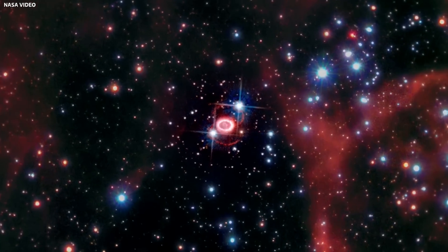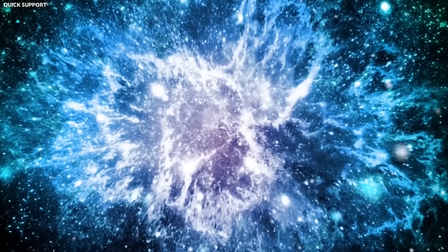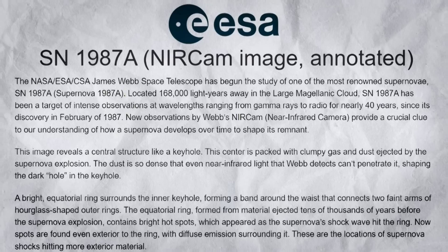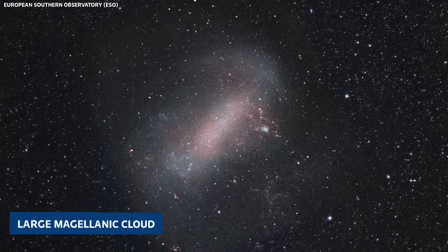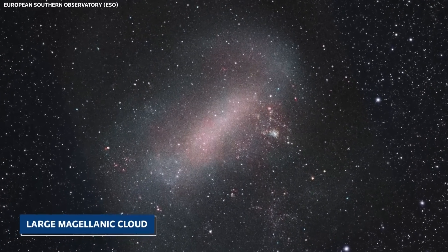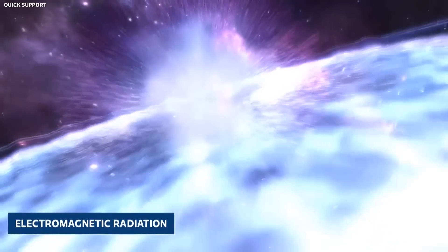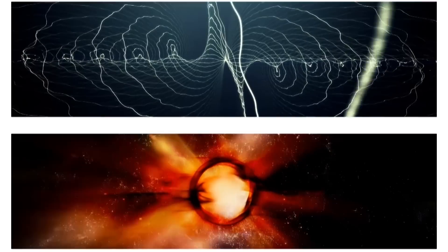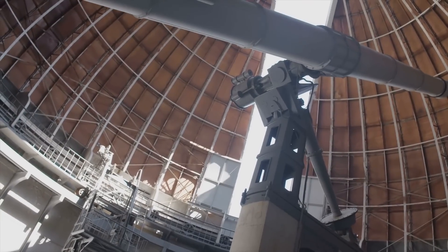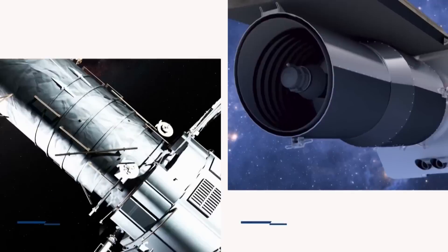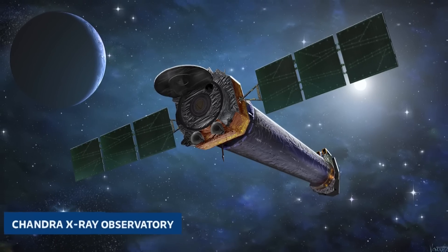The SN 1987A supernova, resulting from the violent aftermath of a giant star's demise, is located 168,000 light-years away in the Large Magellanic Cloud, a satellite galaxy of the Milky Way. This supernova emits a wide range of electromagnetic radiation, from radio waves to gamma rays. It has been previously studied using renowned observatories such as NASA's Hubble and Spitzer Space Observatories and the Chandra X-ray Observatory.